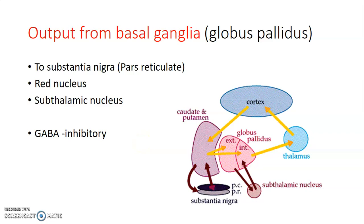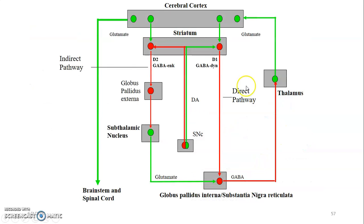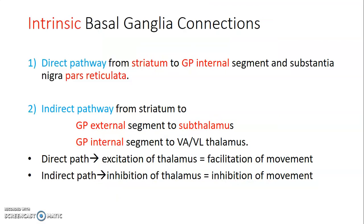GABAergic fibers are usually inhibitory; cholinergic are usually excitatory; dopaminergic lesions cause Parkinson's disease. Output from the basal ganglia is from the globus pallidus to the substantia nigra, red nucleus, and subthalamic nucleus — mostly GABAergic and inhibitory. Input comes to the striatum from the cortex, thalamus, and substantia nigra. The intrinsic connections include direct pathways from striatum to globus pallidus internal segment and substantia nigra pars reticulata, and indirect pathways involving globus pallidus to the thalamus.